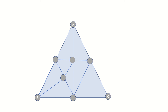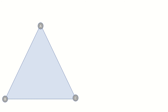The 2D Sperner's Lemma states that if you triangulate a triangle and apply a Sperner coloring to the vertices of that triangulation, then there is at least one triangle within your triangulation such that all its vertices are colored with a different color. Let's say we have a triangle ABC where vertex A is colored with color 1 (blue in this case), vertex B is colored with color 2 (red in this case), and vertex C is colored with color 3 (black in this case). We're going to continue referring to blue as color 1, red as color 2, and black as color 3 in this video.